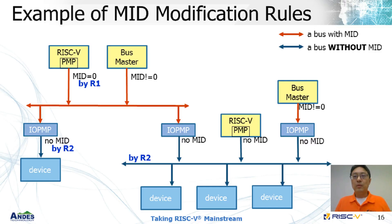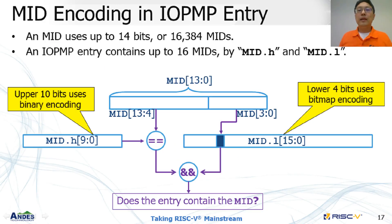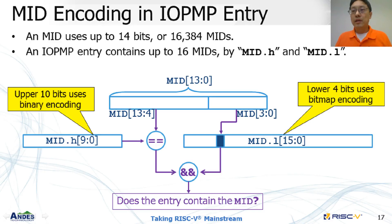This is an example. According to the previous rules, we can bottom-up deduce this result. For example, some bus masters use a zero MID, some buses do not need an MID. In this proposal, an MID uses up to 14 bits. Each IOPMP rule contains two fields, MID.Edge and MID.L, to store at most 16 MIDs.